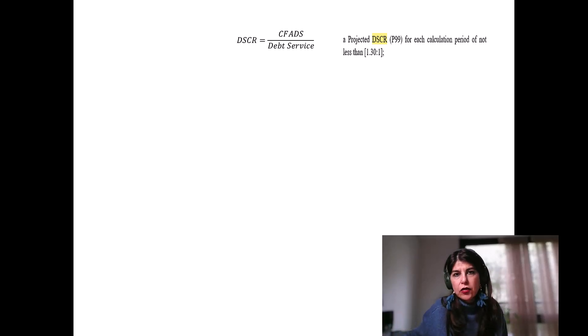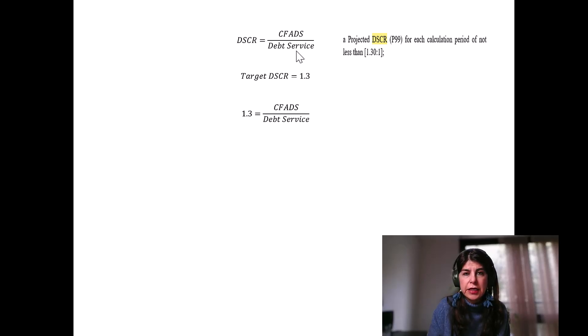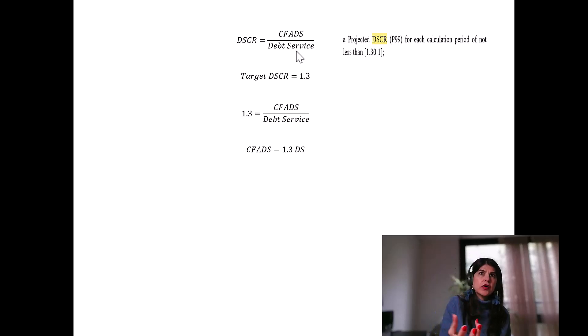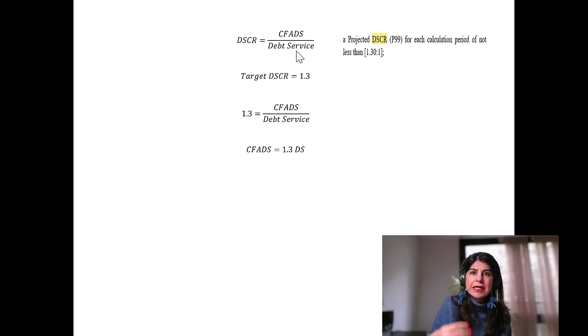Let's look at the DSCR equation to understand the cash buffer. DSCR is defined as cash flow available for debt service (CFADS) divided by debt service, where debt service is principal plus interest. If we take the ratio required by lenders of 1.3 and plug it into the DSCR equation and rearrange, we get that CFADS equals 1.3 times debt service. This means that at each repayment date, lenders want 30% of debt service as additional cash in the accounts in case things go wrong.